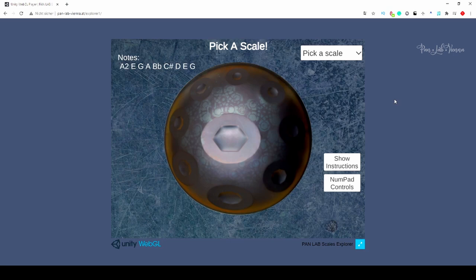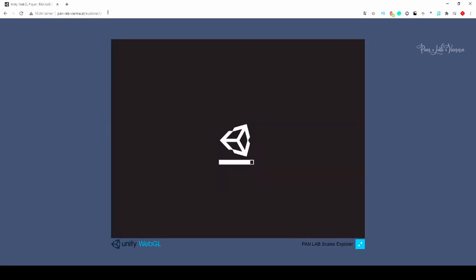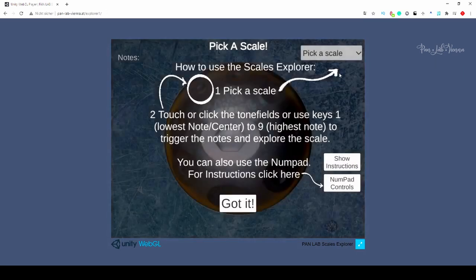Just follow the link in the description below or type pan-lab-vienna.at slash explorer1. This little website will open up here. You can see the Scales Explorer loading, and we can switch to full screen mode right here.